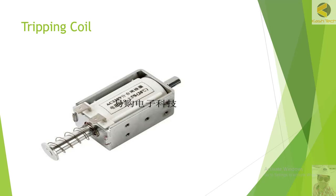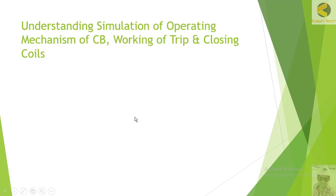This is how the tripping and closing coil look — basically it is a coil solenoid, and the metallic part of the solenoid hits the latch mechanism. Once energized, it strikes the latch and releases the spring. Once de-energized, the spring keeps the solenoid back. In the next section you will see a simulation showing how the circuit breaker spring and closing spring charge, how the tripping spring charges, and how the coils release the latch mechanism. Thank you very much.